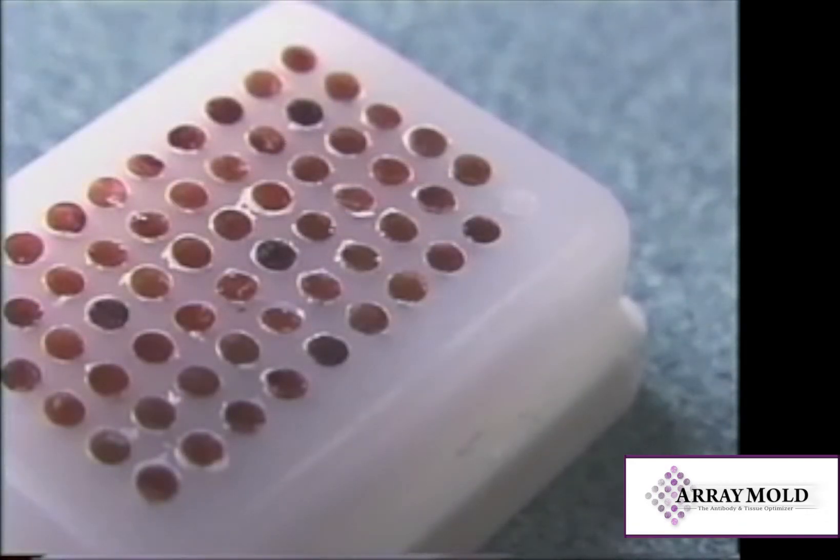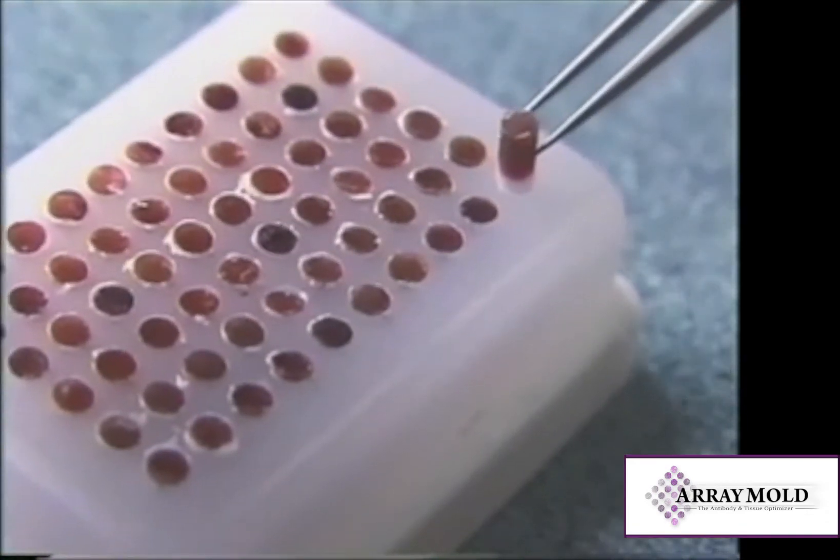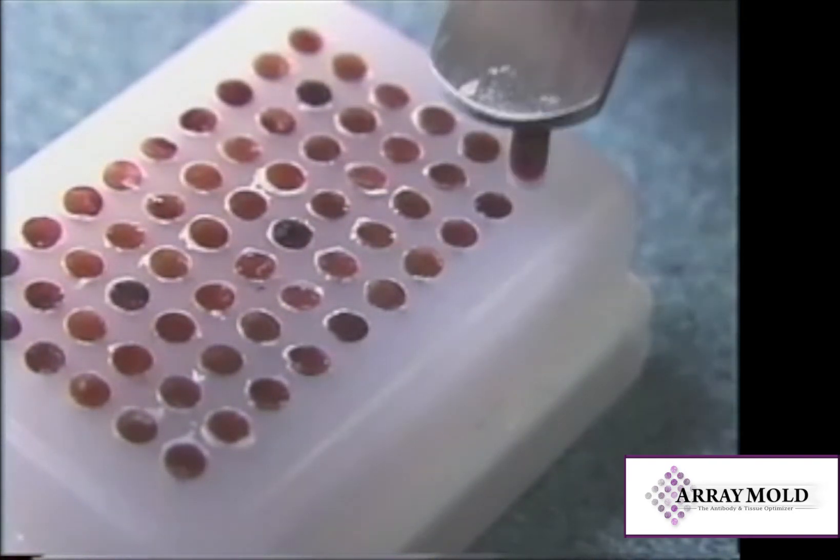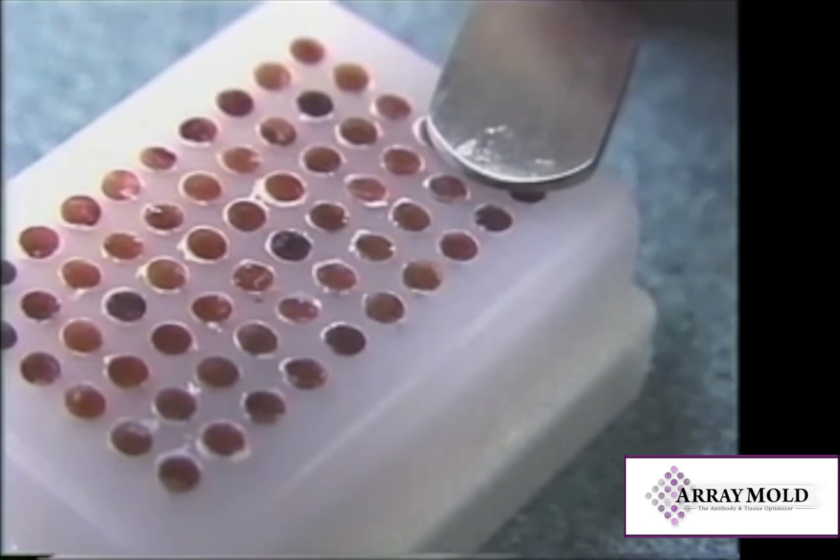If the core comes out of the needle, use forceps to insert the specimen. Flip the forceps over and use the flat end to push the core into the array block.